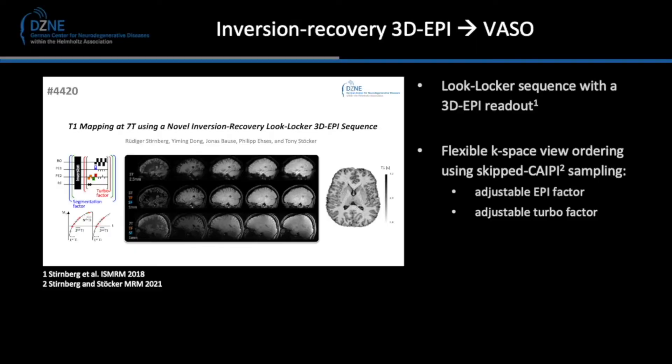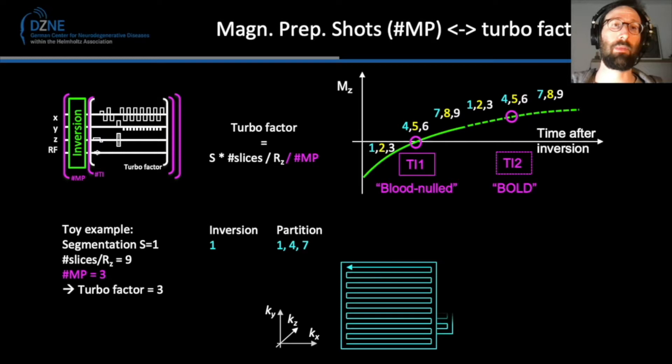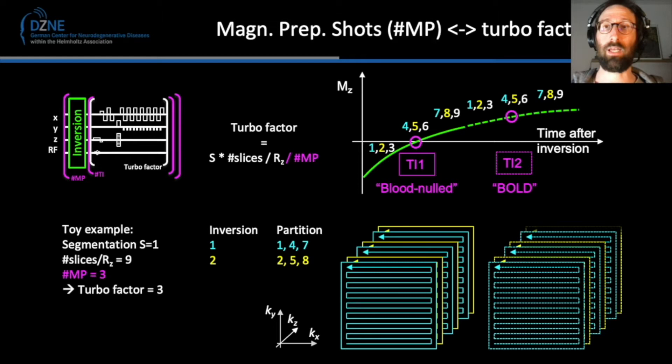To do this, we need a good sequence, and this is where Rüdiger Stirnberg comes into play. In 2018, we proposed the 3D EPI T1 mapping technique with flexible CAIPIRINHA view ordering. Renzo realized that this is also very practical for VASO imaging, because the turbo factor can be adjusted freely to meet the blood nulling condition. In this toy example of 9 partitions, we get the complete CAIPIRINHA-based data of a blood-nulled and a BOLD image using a turbo factor of 3.